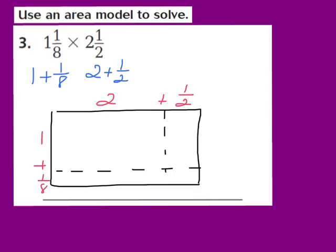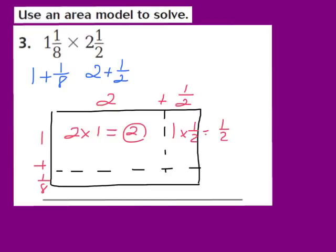Now our next step is to find the area of each section. I'm going to find the area of this first rectangle by multiplying 2 times 1, and 2 times 1 gives me 2. Now we find the area of the next section by multiplying the whole number 1 by the fraction 1/2. 1 times 1/2 gives us 1/2. So we now have the area of section number 2.